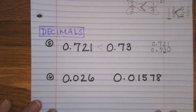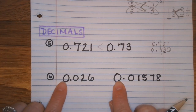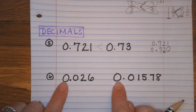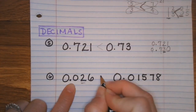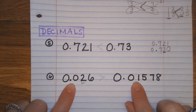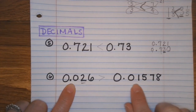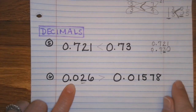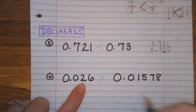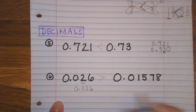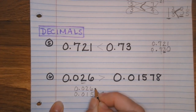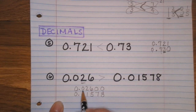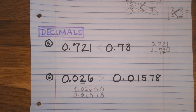For number six, you could do this horizontally using your fingers or line it up vertically. Zero and zero are the same, two and one — two is bigger, so this decimal is larger. Even though one number has more digits, it looks bigger but you can't judge by that. You have to go number by number. I'll line it up vertically to show the point — you can make them have the same number of place values by adding zeros to the back, which does not change the value. Two is bigger than one, so that is our larger decimal.